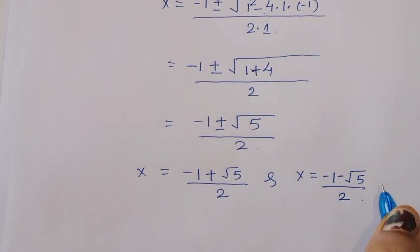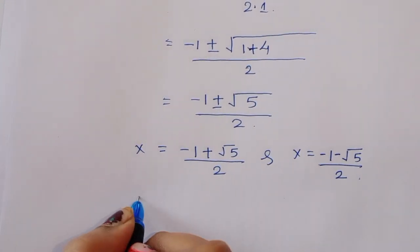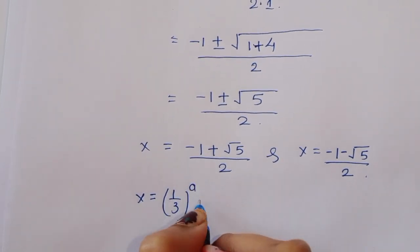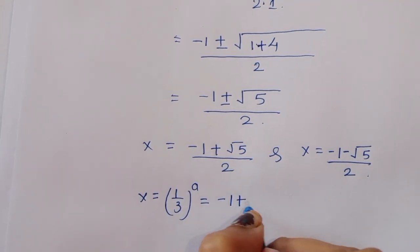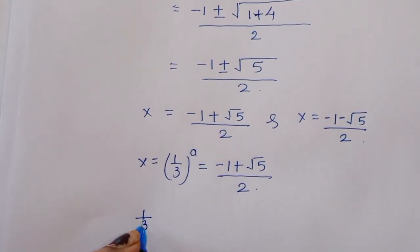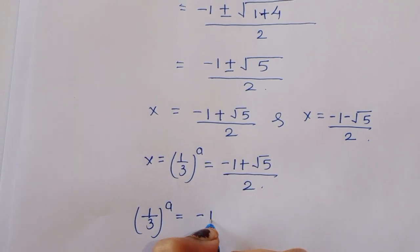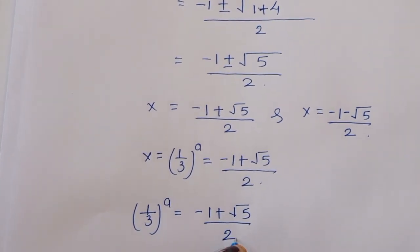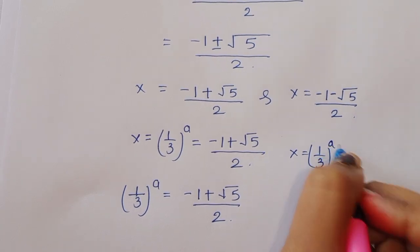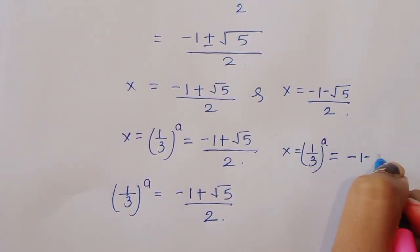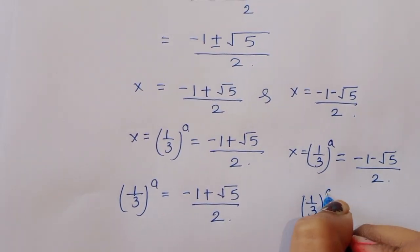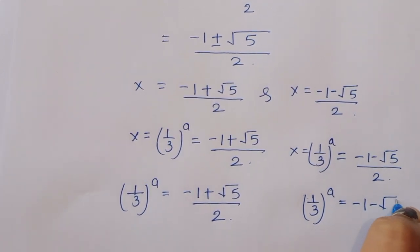We got these two values. Now back-substituting: x is equal to 1 upon 3 power a. So 1 upon 3 power a is equal to minus 1 plus square root of 5 divided by 2, and separately, 1 upon 3 power a is equal to minus 1 minus square root of 5 divided by 2.